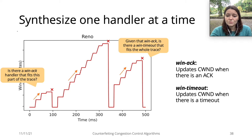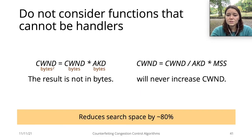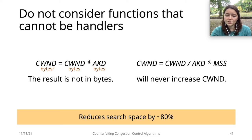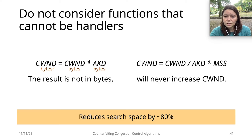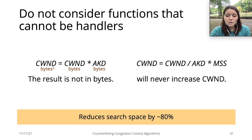Our second goal was to reduce the search space, thus reducing the number of calls to the solver. We use domain-specific knowledge to remove from the search space functions that we know would not be good handlers, even before considering the traces. For example, we remove any function whose output would not be in bytes. Similarly, we don't need to consider for WinAC handlers functions that can never increase the window size. Removing functions like this allows us to reduce the search space by around 80%.